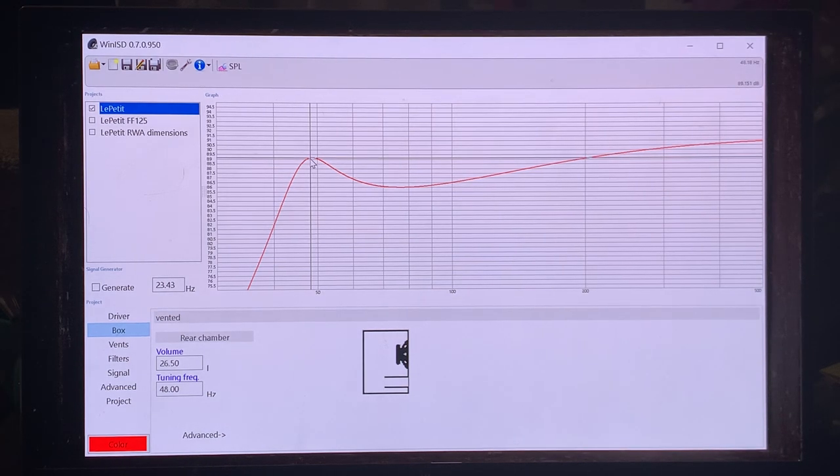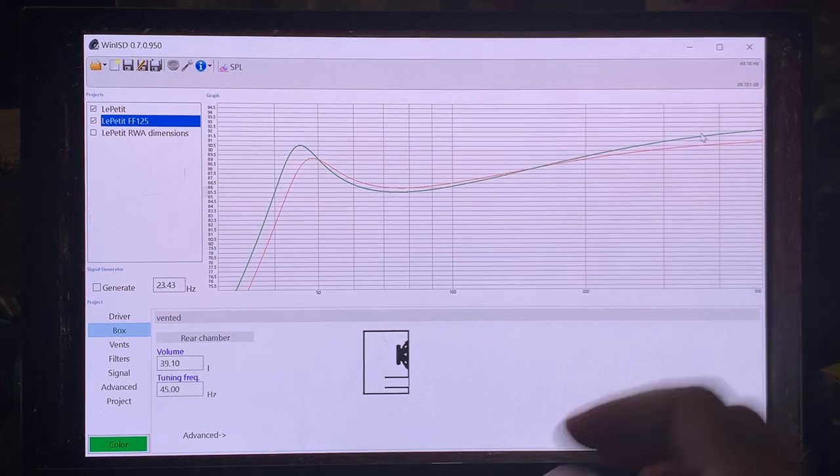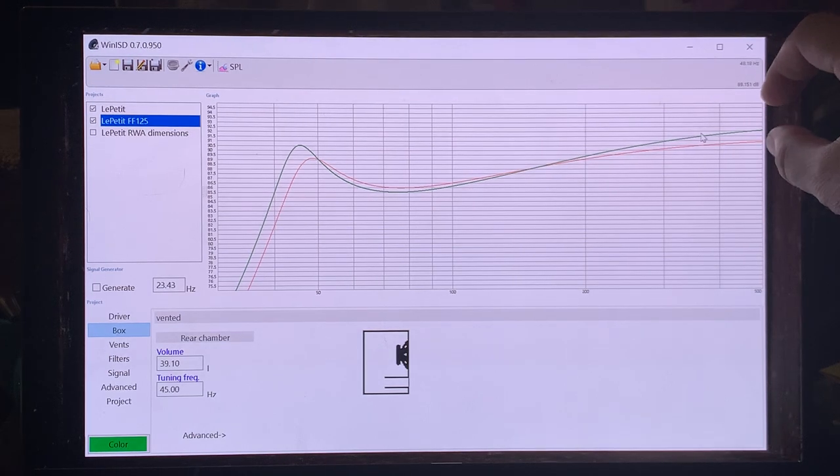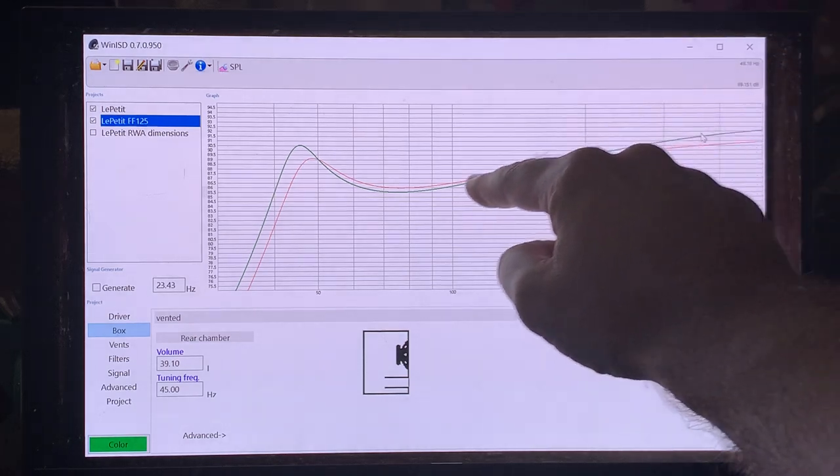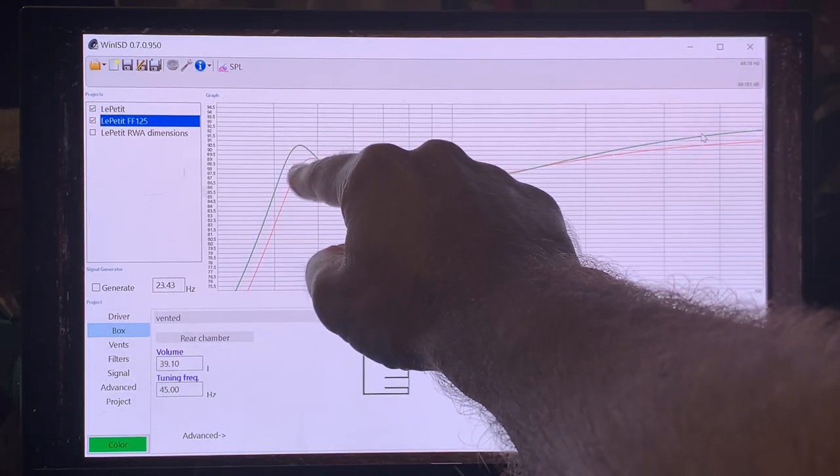So what happens if we add the FF125 instead. Add, and now what we have, you see, it also has like a 1 dB higher efficiency in the higher frequencies, then in the mid-range it drops a little bit more, but then we have a major peak at the bass.